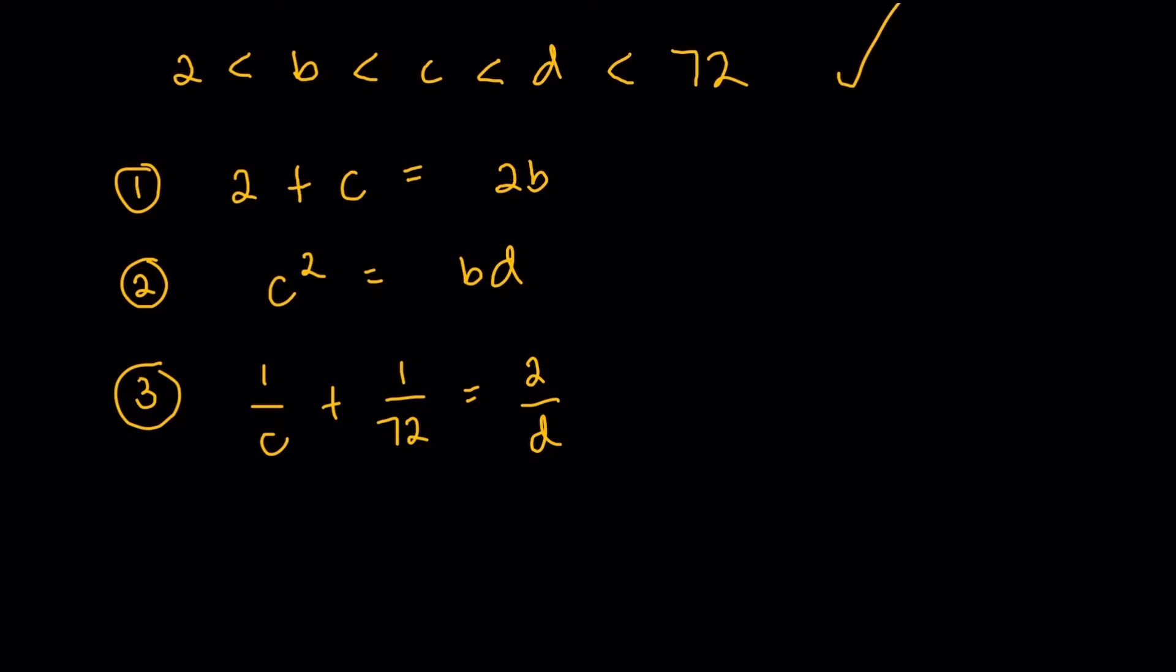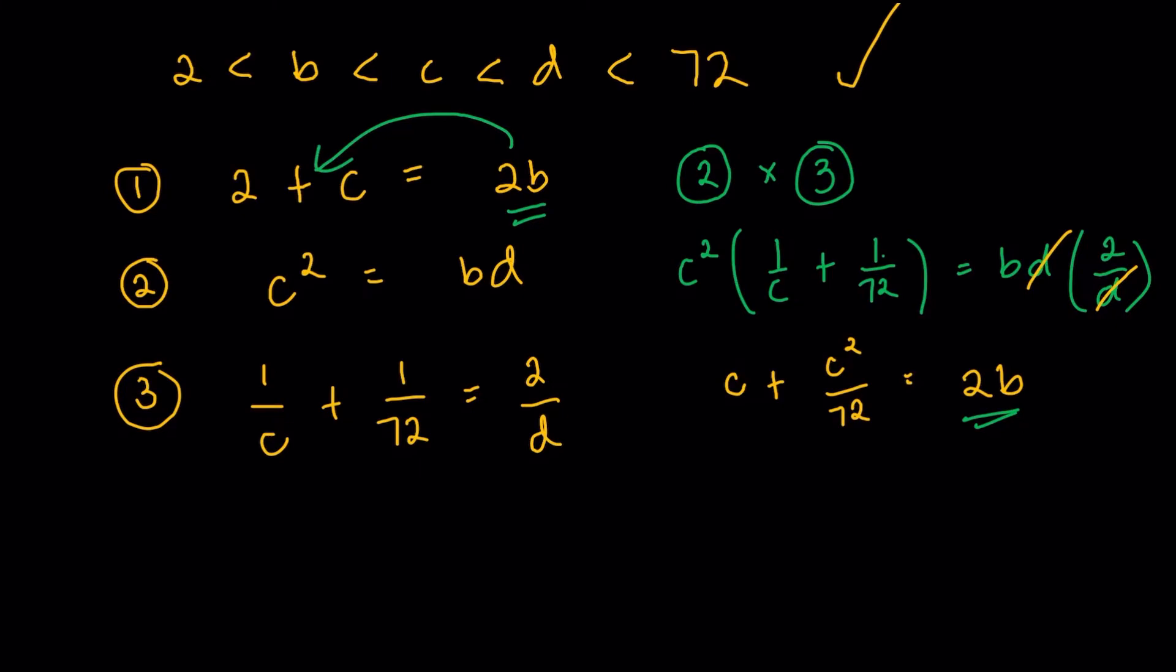All right, now you could do whatever you want. But I realized that there is an easy way out of this because what I could do here is I'm going to multiply the left-hand side of equation 2 with the left-hand side of equation 3 and the right-hand side of equation 2 with the right-hand side of equation 3. So if I'm going to multiply equation 2 by equation 3, it's going to be C squared times 1 over C plus 1 over 72, that's going to be equal to BD times 2 over D. I could cancel the D, and then this part, it's going to give me C plus C squared over 72, and this would just simply be equal to 2B. And here is where I could incorporate my equation 1, because I know 2B, it's just going to be C plus 2. So I would have C plus C squared over 72 being equal to 2 plus C.